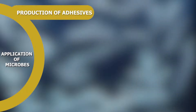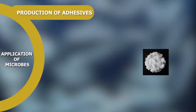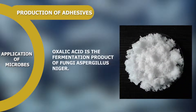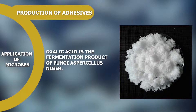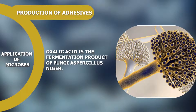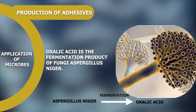Production of Adhesives: Oxalic acid is used in dyes as an adhesive agent and is also used in bleach. Oxalic acid is the fermentation product of the fungi Aspergillus niger.